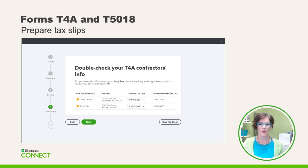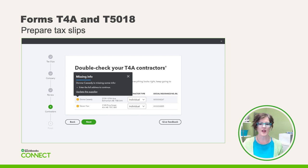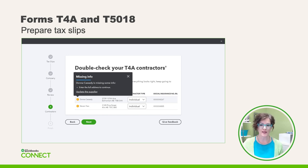QBO will prompt you to double-check the contractor information. If information is missing, hover over the name to view what's missing and see how QBO will assist you in addressing the problem. A dialog box will pop up with a handy link called Update the Supplier. Click on the link, make the necessary changes, then click the back button on your browser to return to this screen. If you leave the interview at any point, it will pick up where you left off.